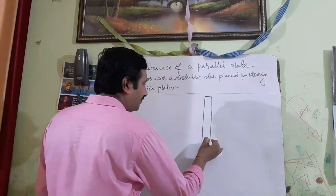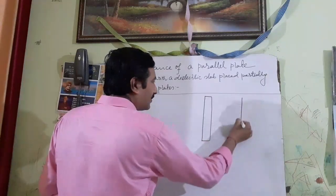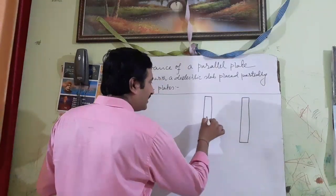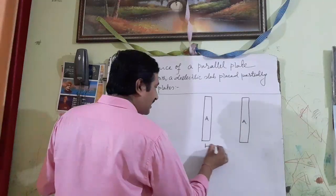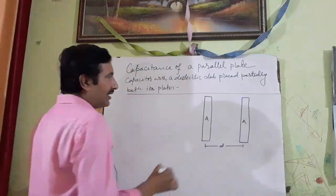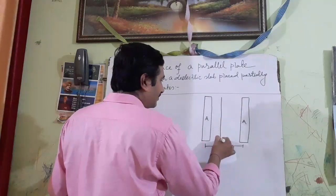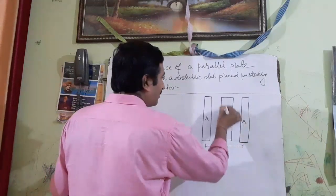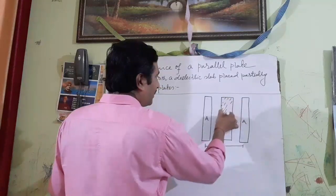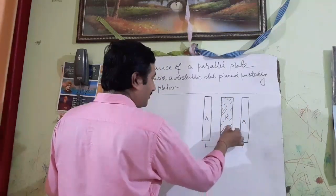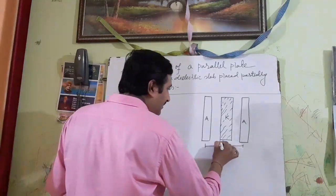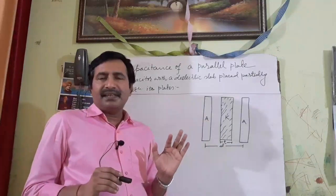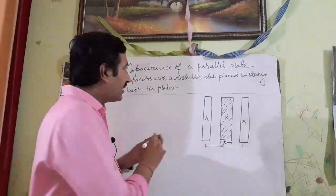Let us consider a parallel plate capacitor having two conducting plates of area A each, separated by a distance D. A dielectric slab of dielectric constant K is inserted in between its plates. Its thickness is T, and you must understand that this thickness T is less than D — T can also be equal to D.